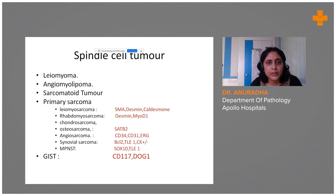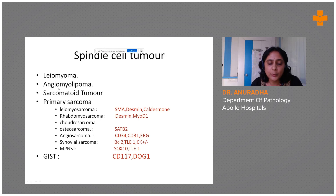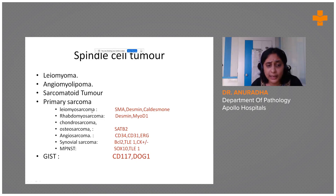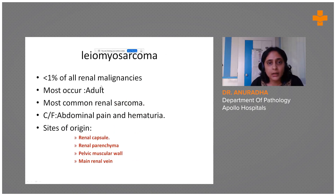Coming to the spindle cell tumors of the kidney — whenever we encounter spindle cell tumors, we need to entertain a differential diagnosis. Leiomyoma is the benign component; when it is malignant-looking, sarcomatoid tumor is a differential. Other primary sarcomas like leiomyosarcomas, rhabdomyosarcoma, and others must be considered. Rarely, GIST of the renal parenchyma can also occur.